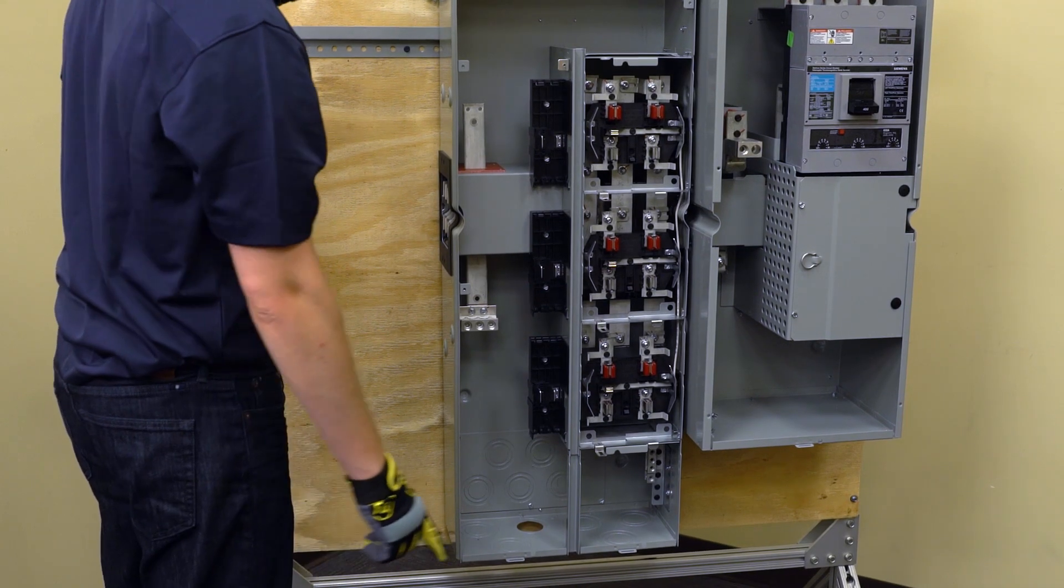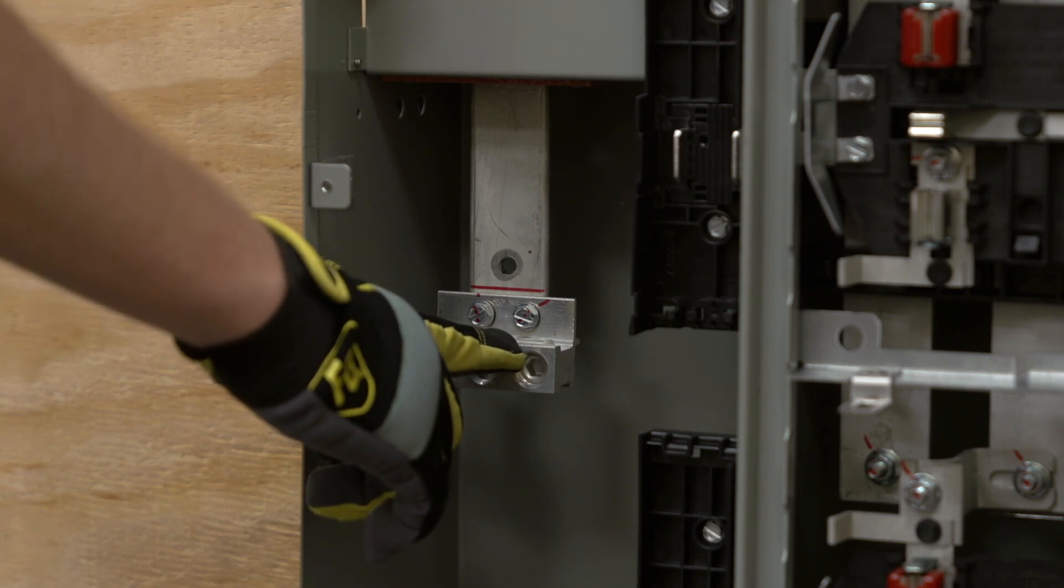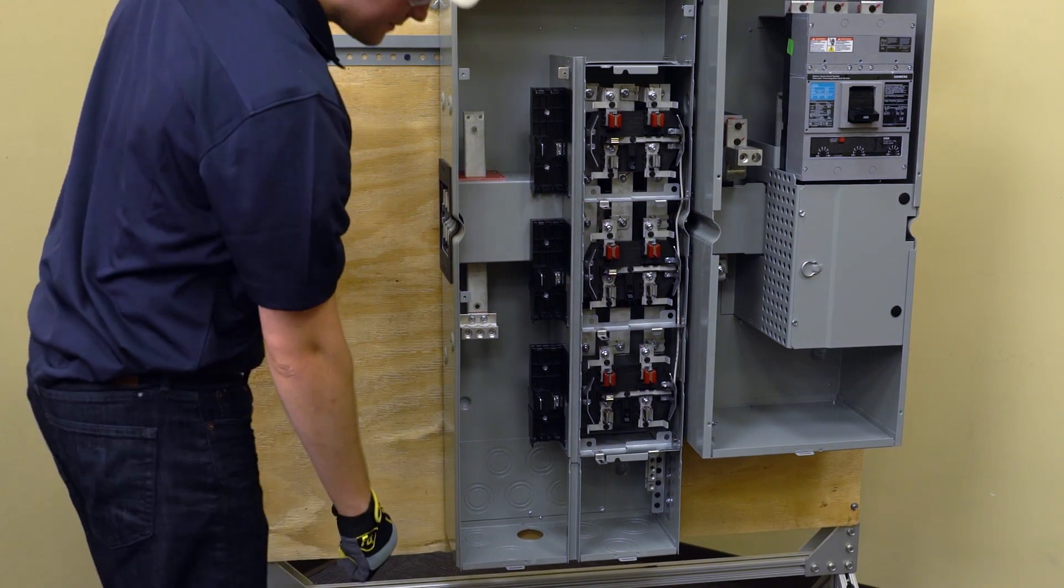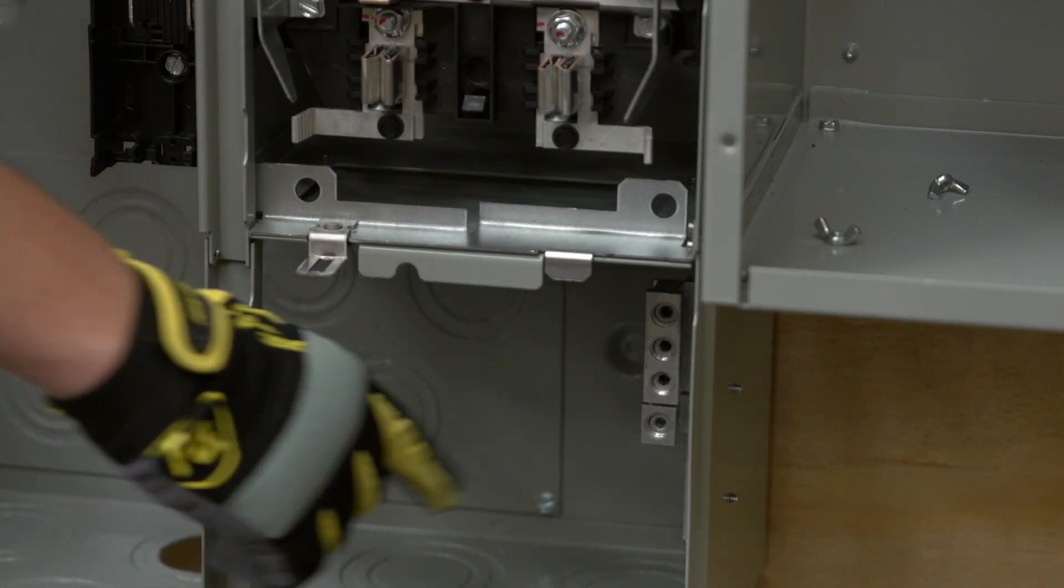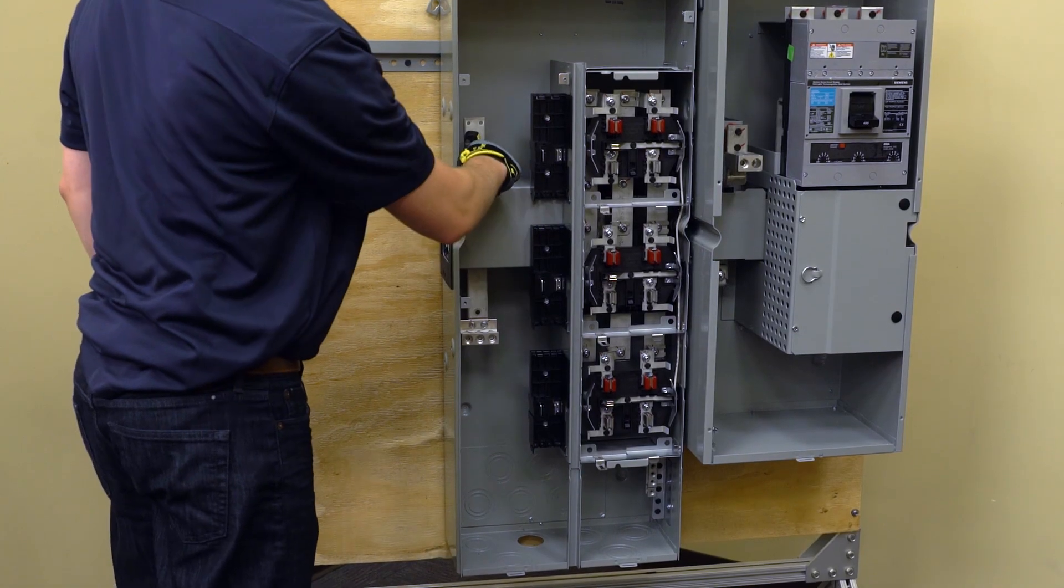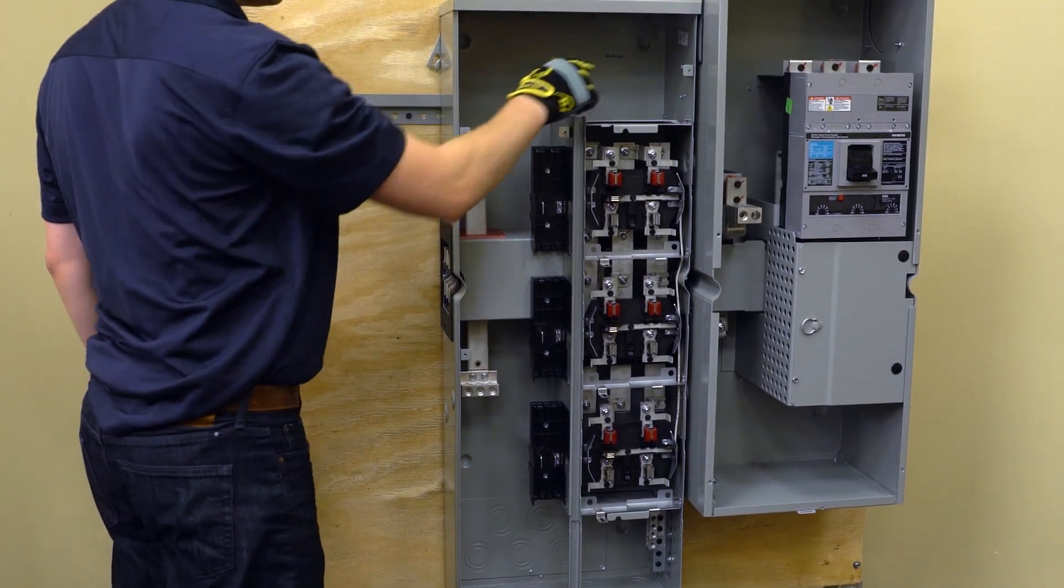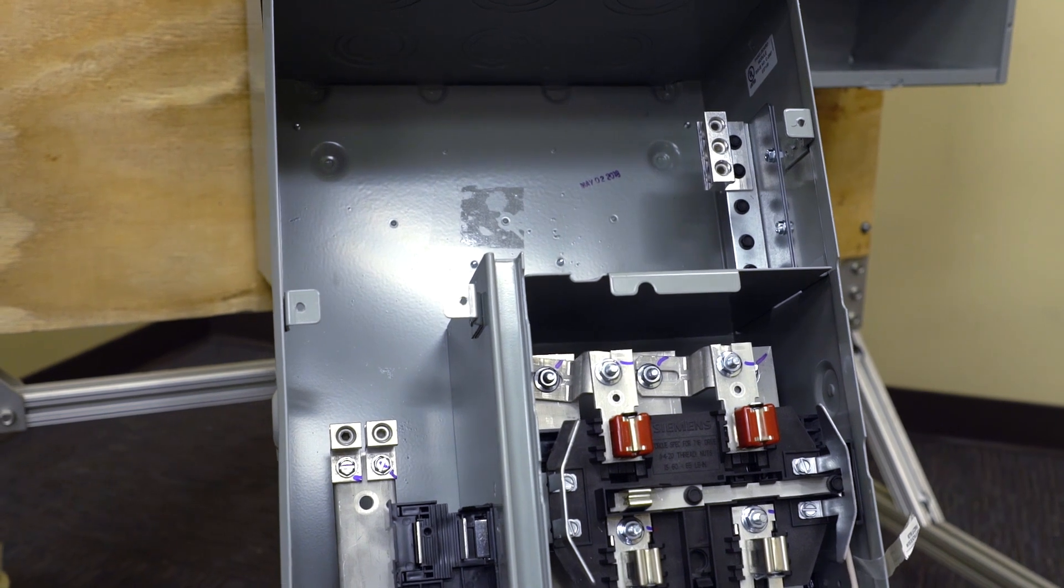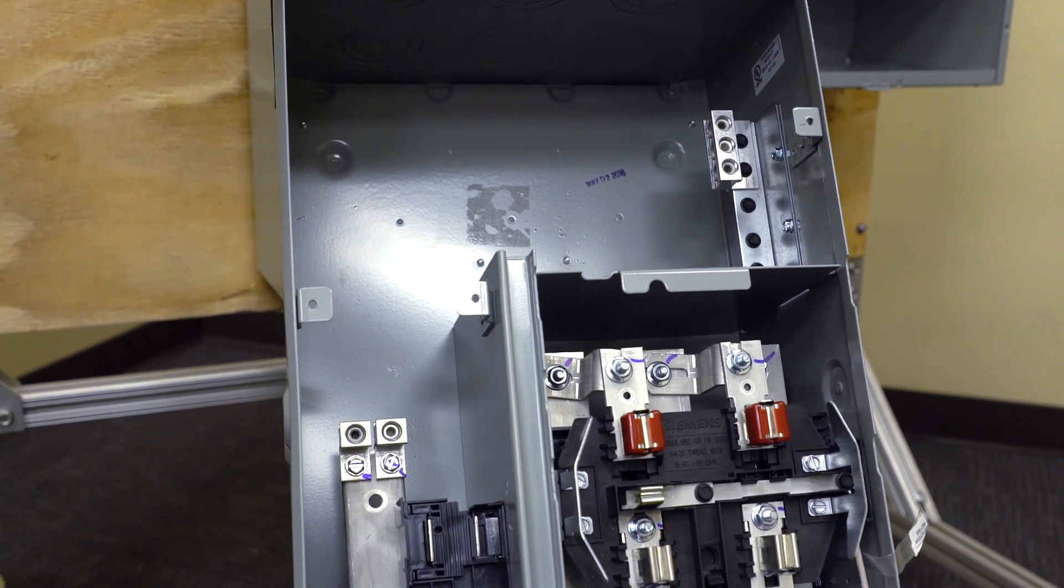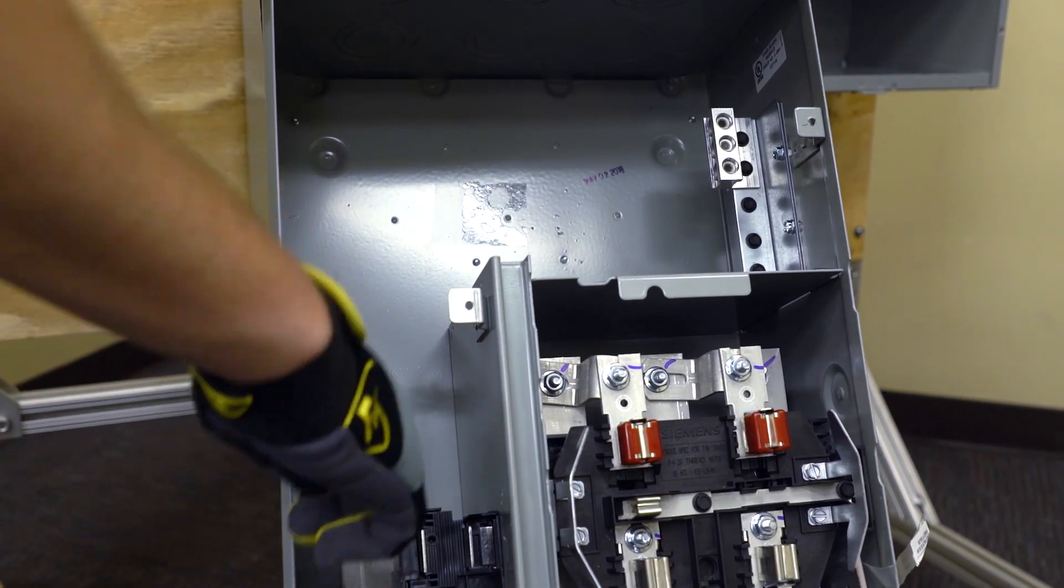If you are installing a NEMA 3R residential stack, the neutral and ground lugs will be in their lowest positions. But they can be moved to the top position to save space and wire. If the NEMA 1 versions of the residential meter stacks are ordered, the neutral and ground lugs will ship from the factory in the top positions.